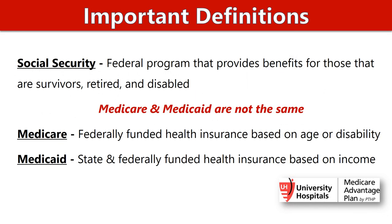Some important definitions before we get started. Social Security is a federal program that provides benefits for survivors, retired, and disabled individuals. Medicare is a federally funded health insurance based on age or disability. Medicaid is state and federally funded health insurance based on income. An important takeaway is that Medicare and Medicaid are not the same — Medicare is based on your age and disability, while Medicaid is based upon your income.